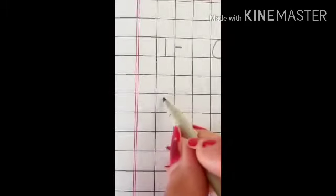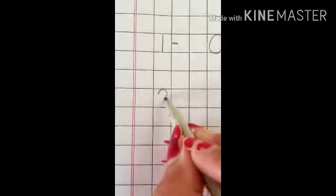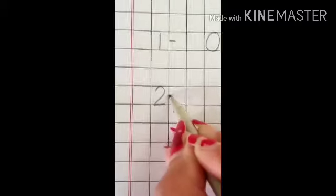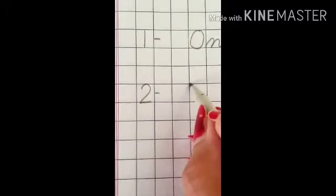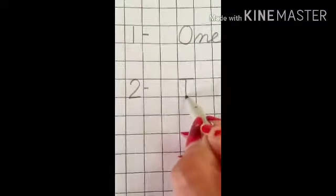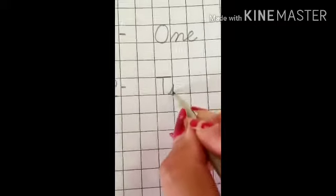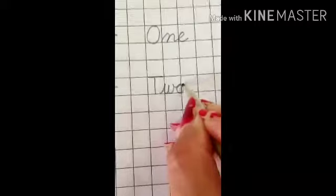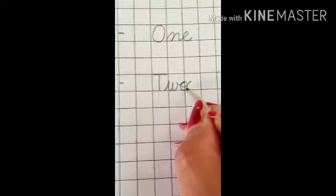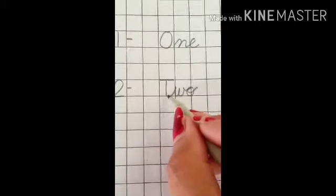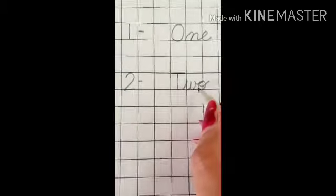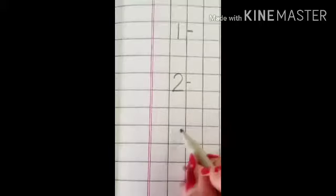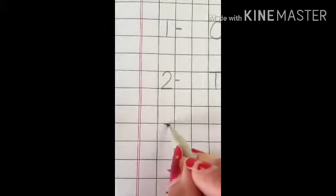And what comes after number 1? Number 2. It's T-W-O. 2. T-W-O. 2. Now what comes after number 2?